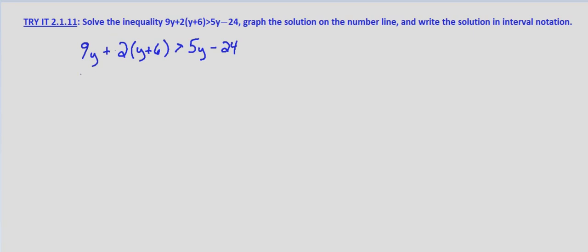First off on the left hand side we will distribute the 2, so 9y plus 2y plus 12 is greater than 5y minus 24.